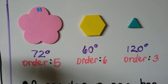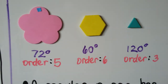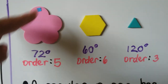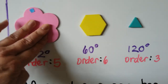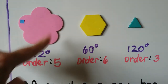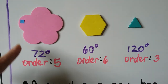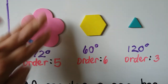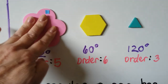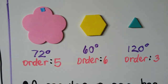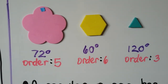For this flower shape, I put a little blue dot here so we could see the top part. If I turn it 72 degrees it'll have the same orientation, and I can do it again, and again, and again, and that would be a fifth time — that's an order of 5. It has 5 lines of symmetry and can be rotated with an order of 5.